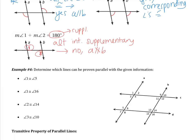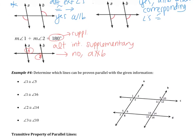Moving on to example 4 — this type of example is extremely difficult. It says: determine which lines can be proven parallel with the given information. I'm going to do 2 with you, and then you're going to do 2.